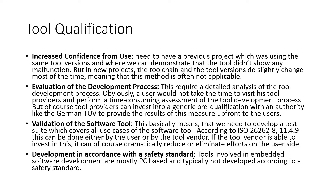The second block is tool qualification, which has four different methods recommended based on ASIL levels. Method A is increased confidence from use — you need a previous project using the same tool version where you can demonstrate that the tool showed no malfunction. However, in new projects the tool chain and tool versions often change slightly, meaning this method is often not applicable.